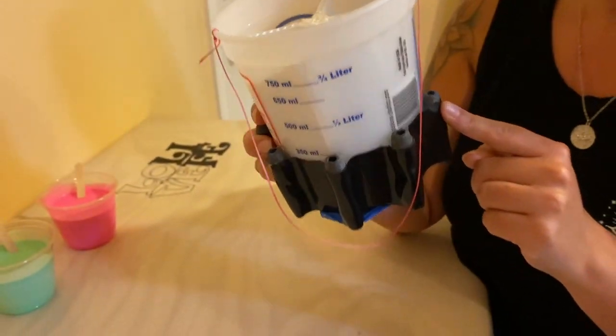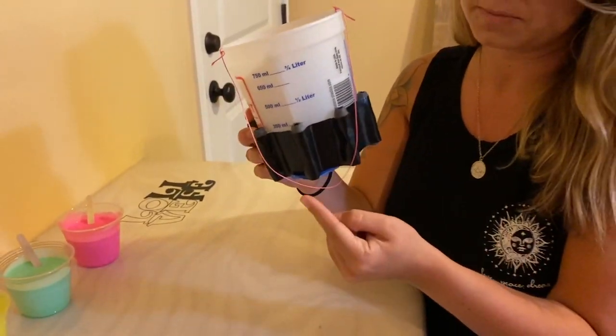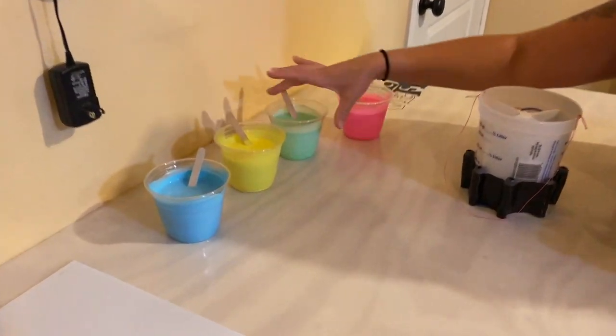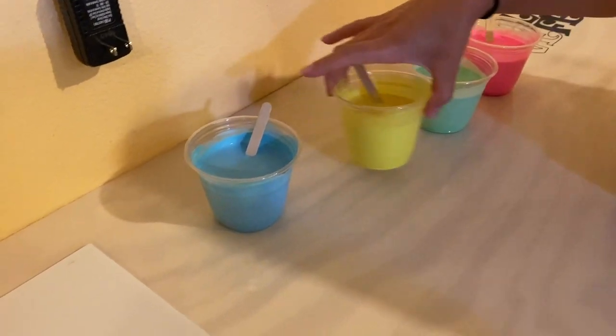I don't know if you can see that, but then we also did the fishing weights around the bottom duct taped. Today I'm going to use pink, green, yellow, and blue.